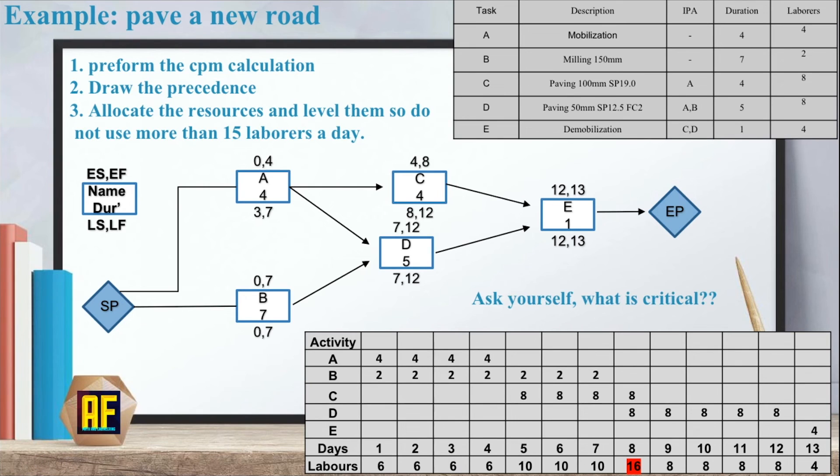Now to solve this we need to think what is critical. Which of these activities I can touch and which I can't touch. So if you remember we said that we have A to D to E or B to D to E. Which means that activity C is not critical. So if I need to pick between these two I can pick activity C.